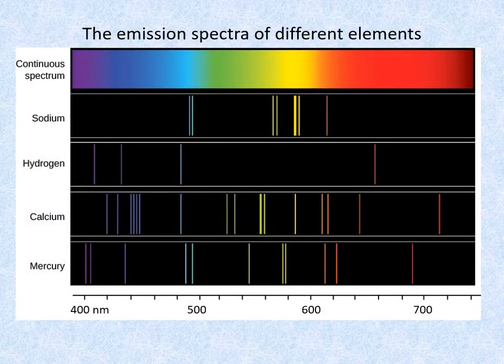At the top again is the continuous spectrum of white light. Beneath are the visible spectra of four different elements. Although some lines in some elements appear almost identical, like for example the blue lines of hydrogen and calcium, at higher resolution they will be different. Other lines may also be present beyond the visible range at either end of the spectrum.